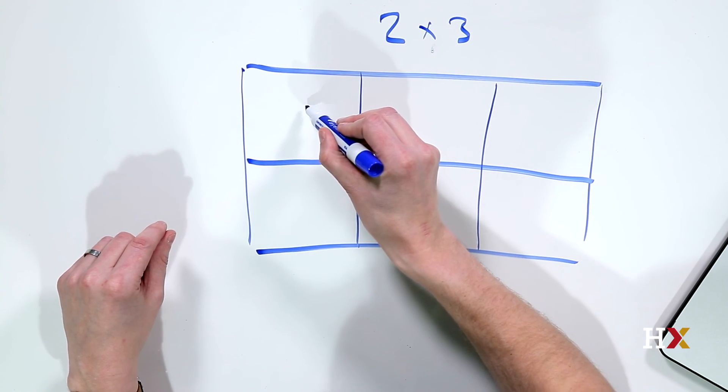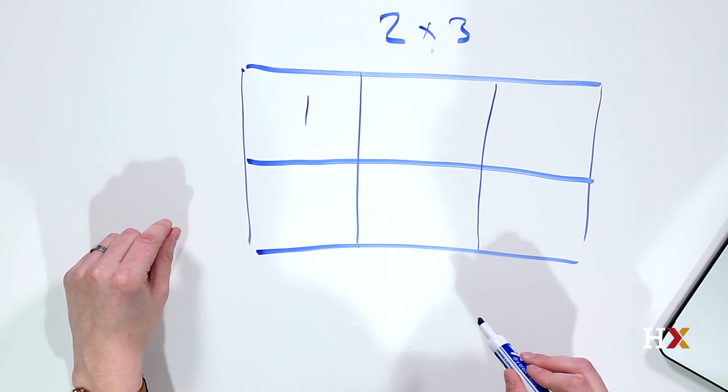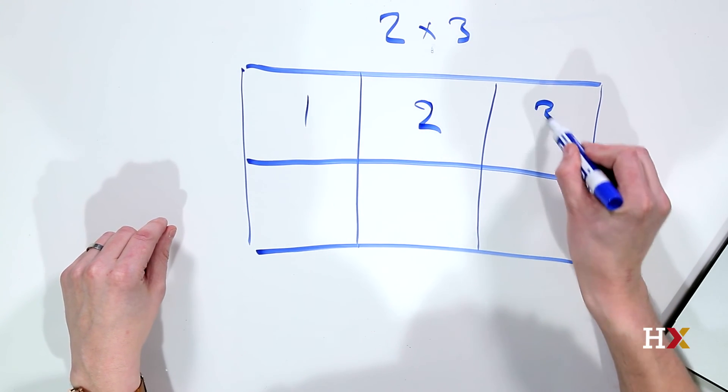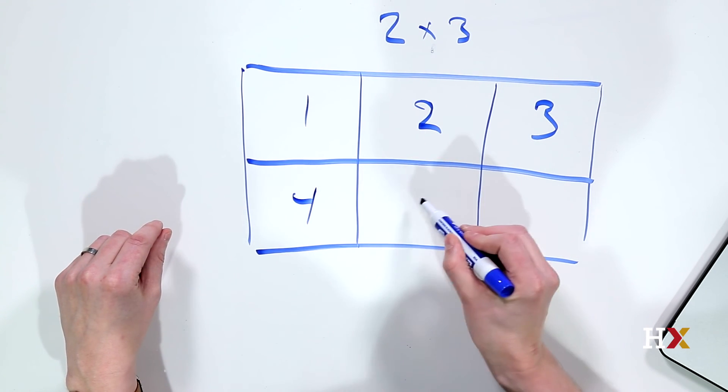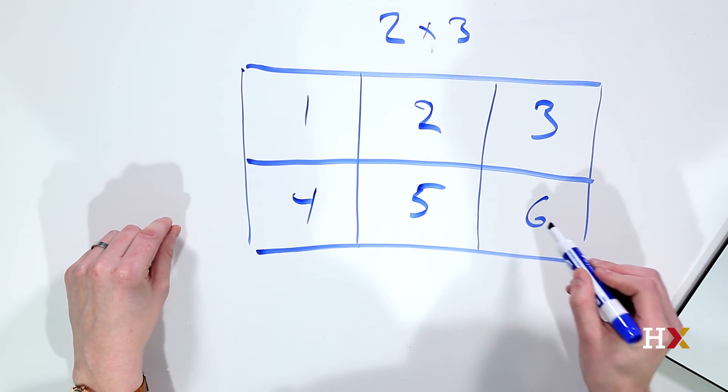The first panel in the top left corner is subplot number 1. This is number 2, and this is number 3. Then we move on to the next row. We have number 4, number 5, and number 6.